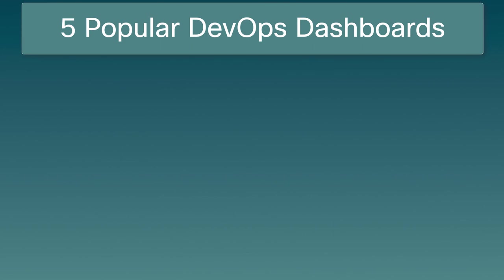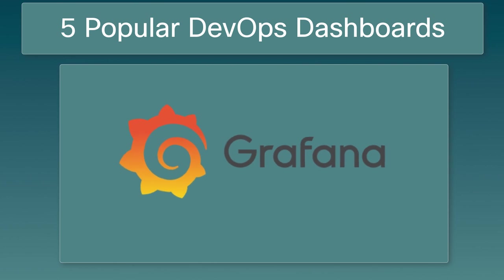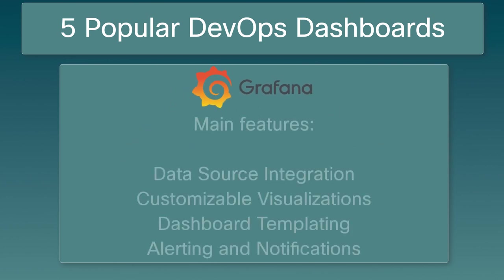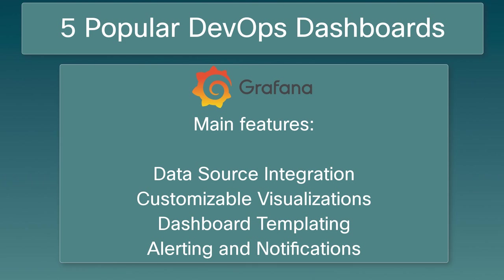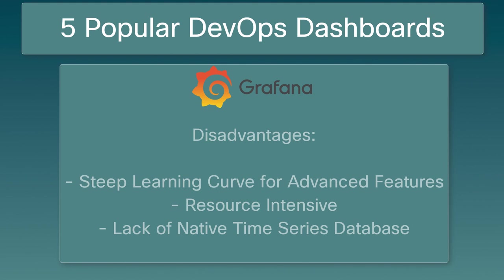Grafana is a widely used open-source DevOps dashboard that offers a range of features to monitor and visualize metrics from various data sources. Main features include data source integration, customizable visualizations, dashboard templating, and alerting and notifications. Advantages include a user-friendly interface, wide community support, and extensibility. Disadvantages include a steep learning curve for advanced features, being resource-intensive, and lack of a native time series database.